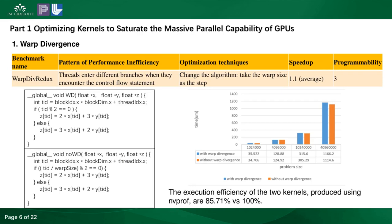For the first objective of optimizing GPU kernels to saturate the parallel capability of GPUs, we include four techniques for CUDA performance optimization. The first addresses a programming problem named warp divergence, which means threads in the same warp enter different branches when they encounter a control flow statement. A warp is the scheduling unit of GPU kernel execution. Because of the lockstep SIMT execution model, when two threads in a warp execute two separate branches, there could be a significant performance penalty.